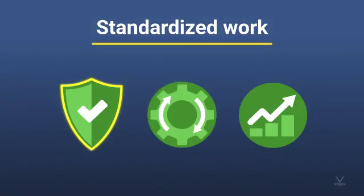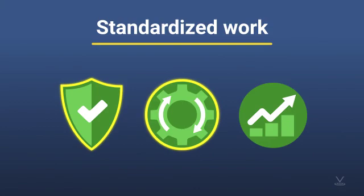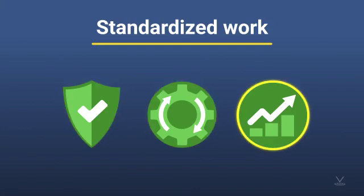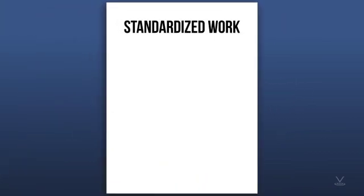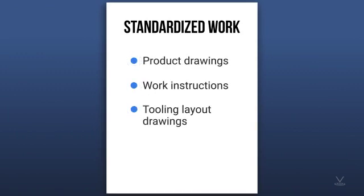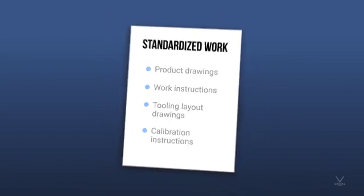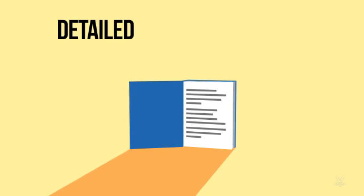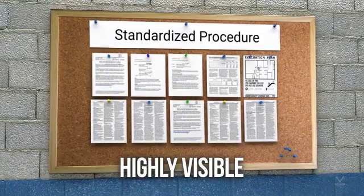Standardized work improves safety and quality by having repeatable processes. It increases efficiency because the elimination of waste is always considered. Standardized work also encourages the use of documents like product drawings, work instructions, tooling layout drawings, and calibration instructions. Standardized work is not just a set of repeatable instructions — it's a whole packaged system that is detailed, documented, and highly visible.